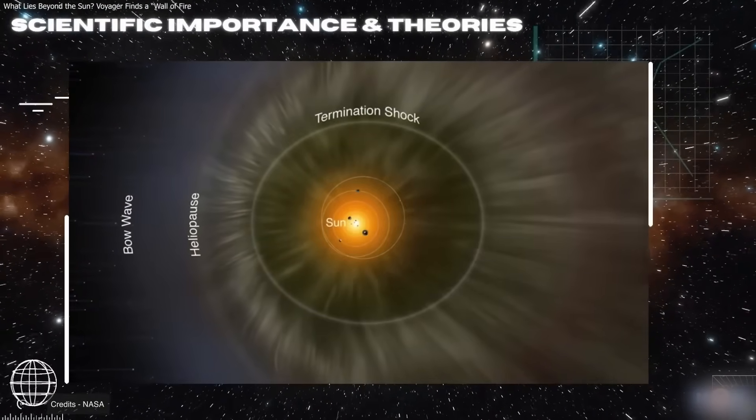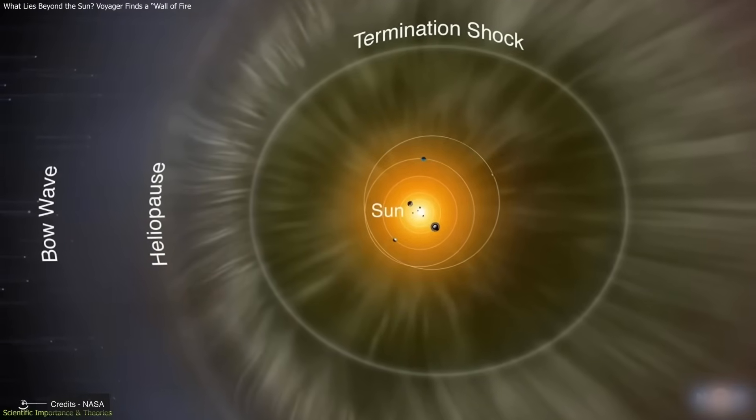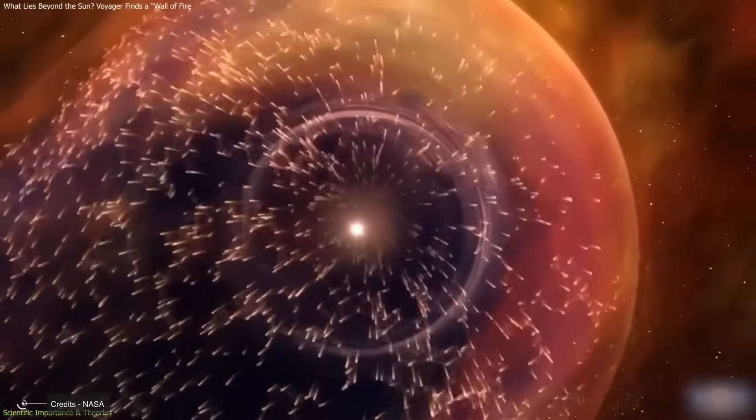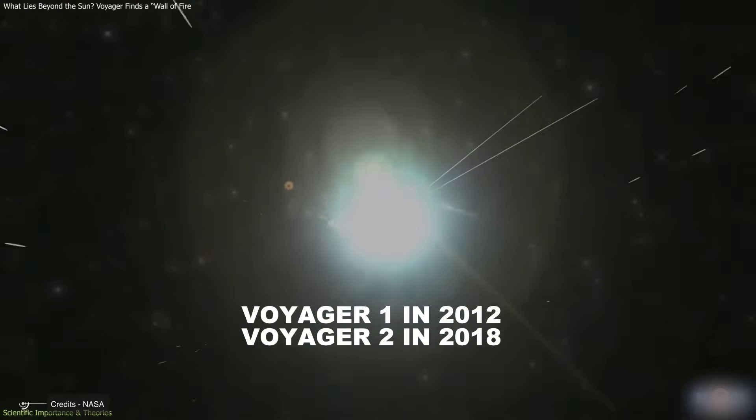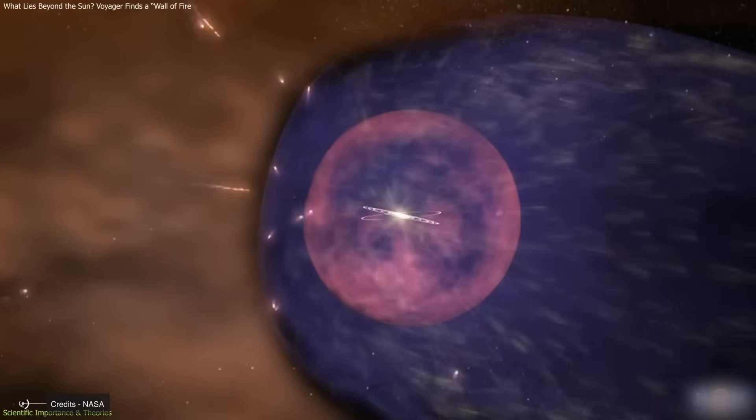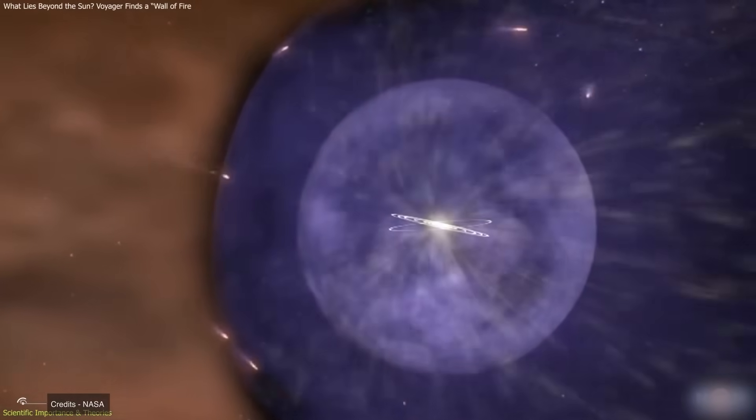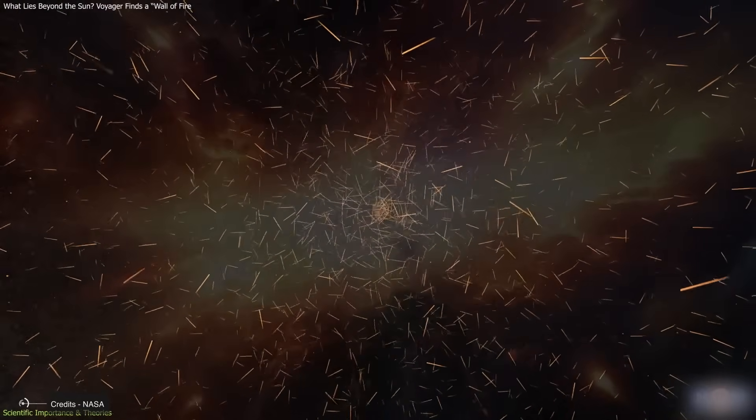To understand this, we need to define clearly what leaving the solar system means. If we are referring to the area dominated by the Sun in terms of solar wind and magnetic fields, then yes, Voyager 1 crossed the heliopause in 2012 and Voyager 2 did so in 2018, becoming the first human-made objects to enter interstellar space. This region is beyond the heliosphere, a kind of bubble of solar particles that surrounds all the planets.